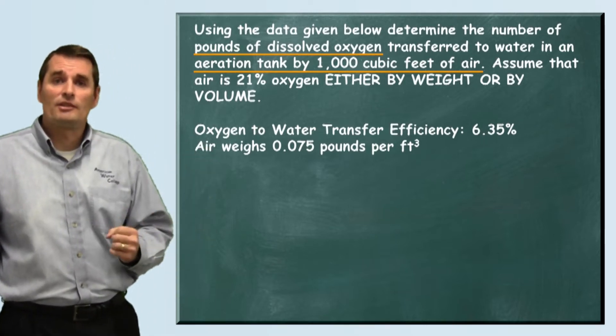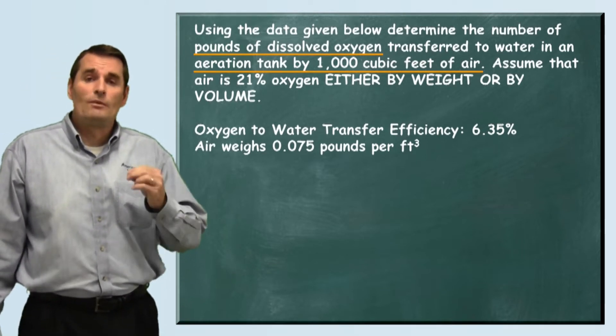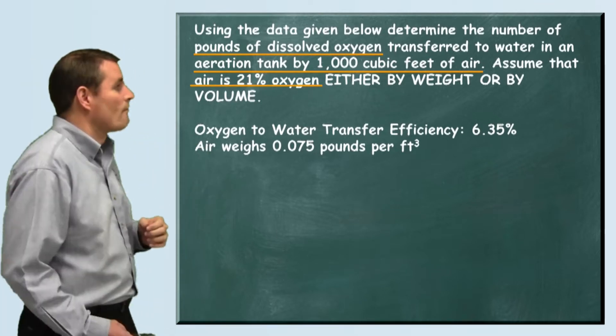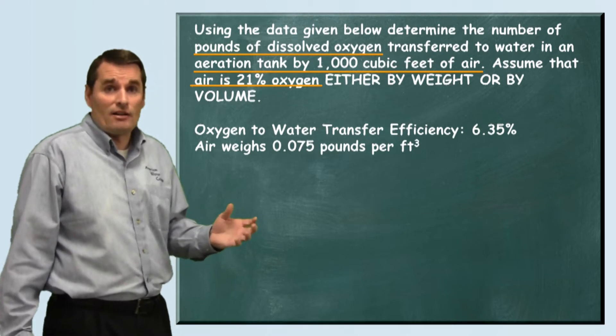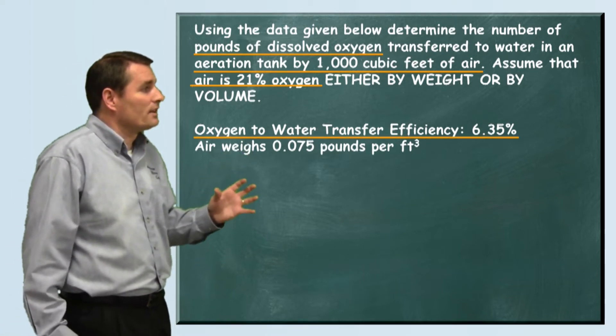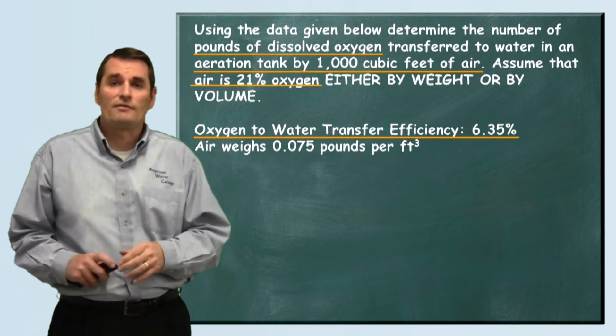They tell us that 1,000 cubic feet of air is pumped into this aeration basin, and we need to know how much oxygen was transferred. There's 21% oxygen in air, so that's going to be an important number for us to use. They also told us the rate, or the efficiency, at which the oxygen is transferred to the water.